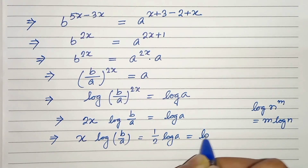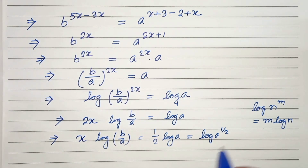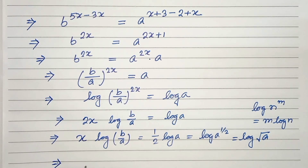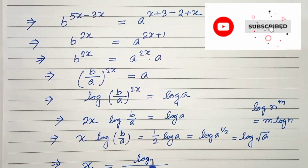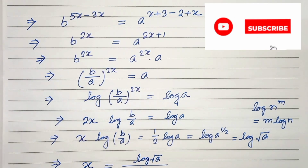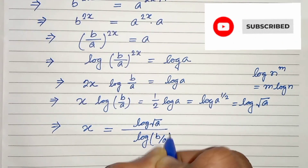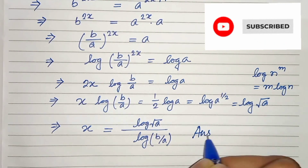That means log of a to the power half, which can be written as log of root a. So from this we can write x equals log of root a divided by log of b by a. This is our solution. Thanks for watching.